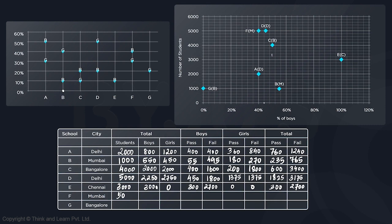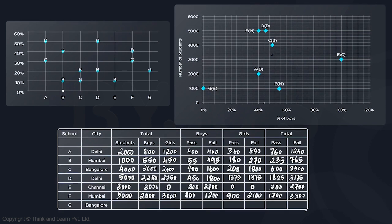School F is from Mumbai with 5000 students. 40% are boys — 2000 boys and 3000 girls. 40% of boys passed — 800 boys passed, 1200 failed. 30% of girls passed — 900 girls passed, 2100 failed. Total passed: 800 + 900 = 1700 out of 5000. Remaining 3300 students failed.